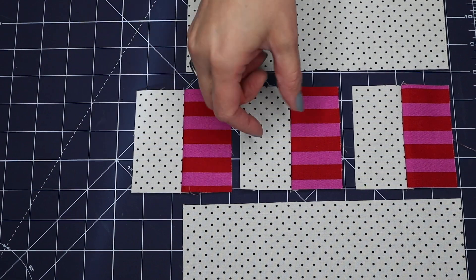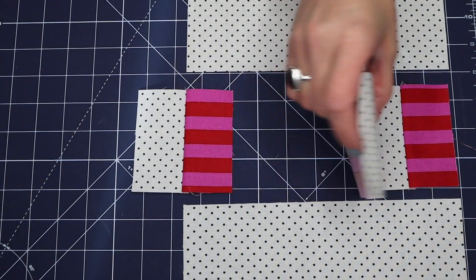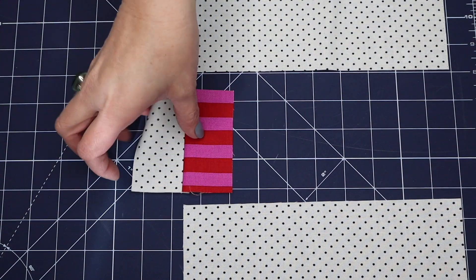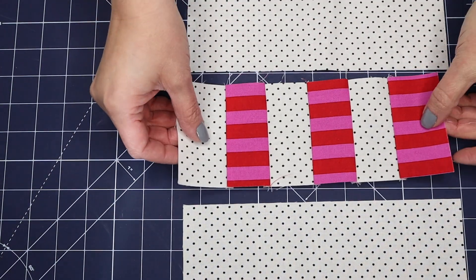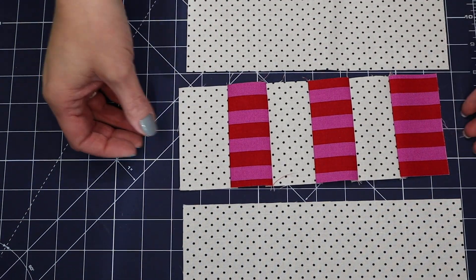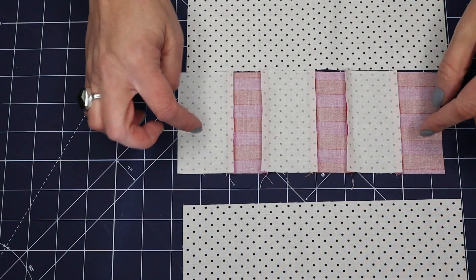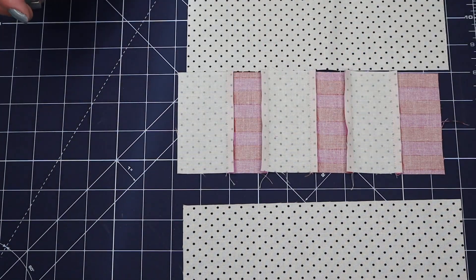And now we're going to stitch these together as well. There, they're all pieced together and they're all pressed towards the darker fabric.